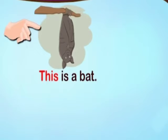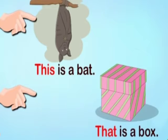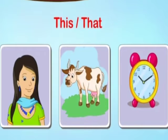Look at this. This is a bat. Look at that. That is a box. We use this and that for only one person, animal or object.